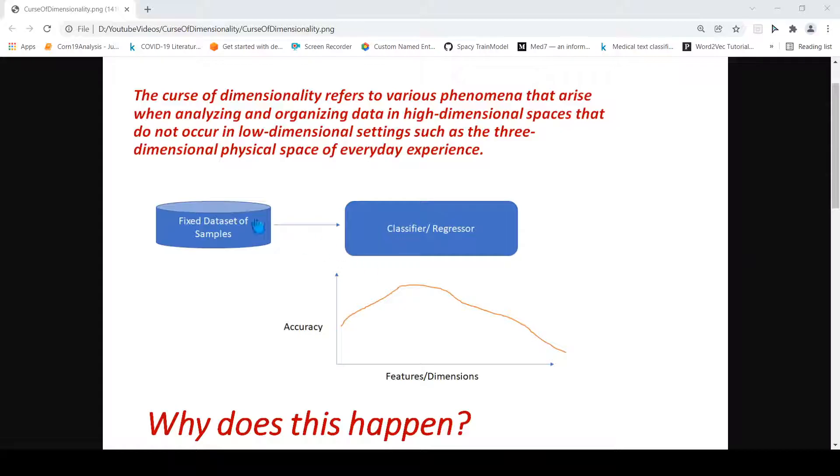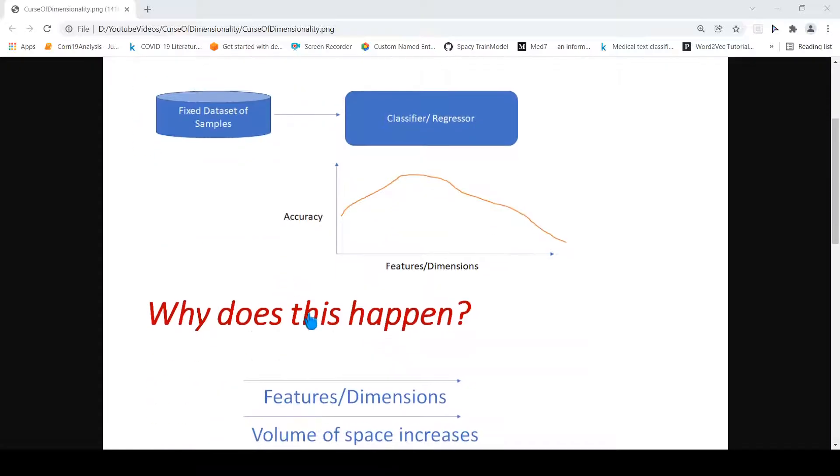So here you have a fixed data set. This is the curse of dimensionality with respect to machine learning. As the features in your data set increase, basically the accuracy goes down. You also require more data. I will come to that. So why does this happen?